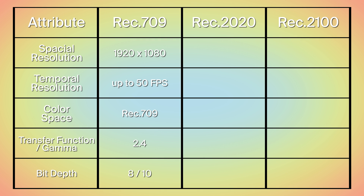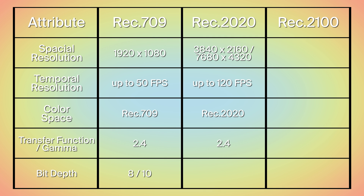Rec.2020 defines two resolutions: 3840 by 2160 and 7680 by 4320, with square pixels giving an aspect ratio of 16 by 9. It has a maximum frame rate of 120 frames per second and uses the larger color space. Rec.2020's gamma is the same situation as Rec.709, so common practice is gamma 2.4. Rec.2020 defines two bit depths of 10 and 12 bits.